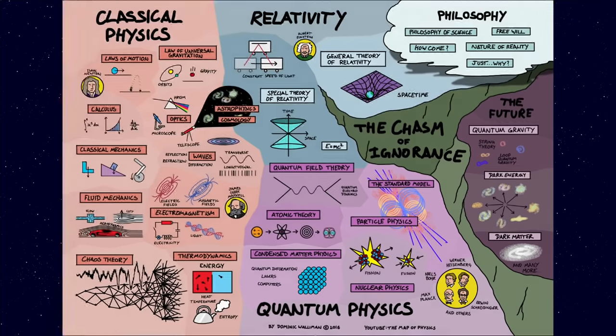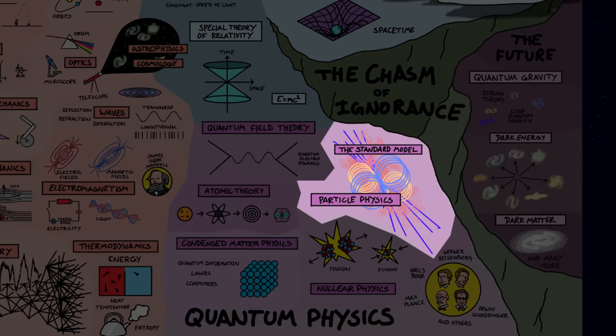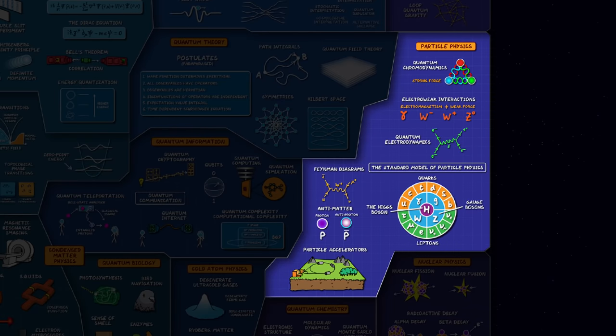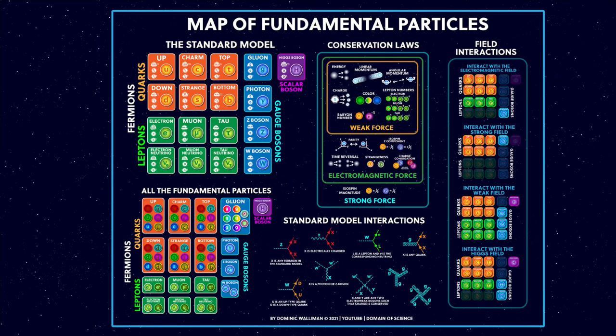We know the standard model isn't complete — there are lots of unresolved mysteries which I'll be taking a look at at the end of the video. Particle physics is one of the main branches of fundamental physics. I've briefly covered it before in the map of physics and in the map of quantum physics. But here we're going to dig deeper, and I'm going to tell you all the basics of the fundamental particles of the standard model, which I've summarised in this map.